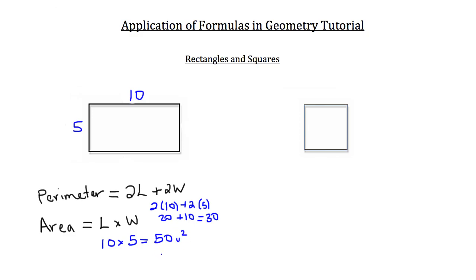It's important to note that because area takes into account two dimensions it's going to have a squared unit at the end, whereas perimeter is only one dimension — the dimension in the plane of the figure you're working with.